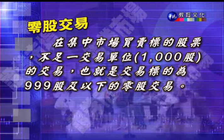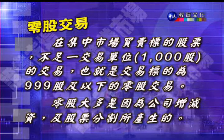目前国内股市最主要的交易形态，除了符合集中交易市场相关规定的交易之外，还包括全额交割股、零股交易、巨额交易、盘后交易、管理股票、场外交易等特殊方式的交易。这些特殊方式的交易主要是为了满足某些类型的交易人，不同于正常交易形态，或者是为了因应特殊情况所产生的。首先我们介绍零股交易，零股交易指的是在集中市场买卖标的股票，不足一个交易单位的交易。